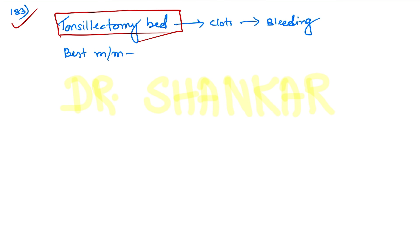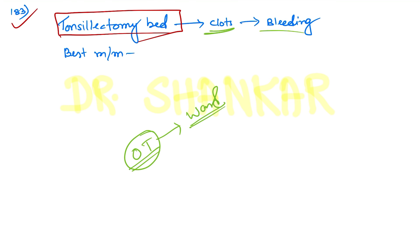Question number 183: after tonsillectomy, the patient was shifted to the ward and was found to have bleeding from the tonsillectomy bed. On examination, a clot was found along with active bleeding. The best possible management — though national-level faculties consider it controversial — is to remove the clot first, as this is the main cause of reactionary bleeding.